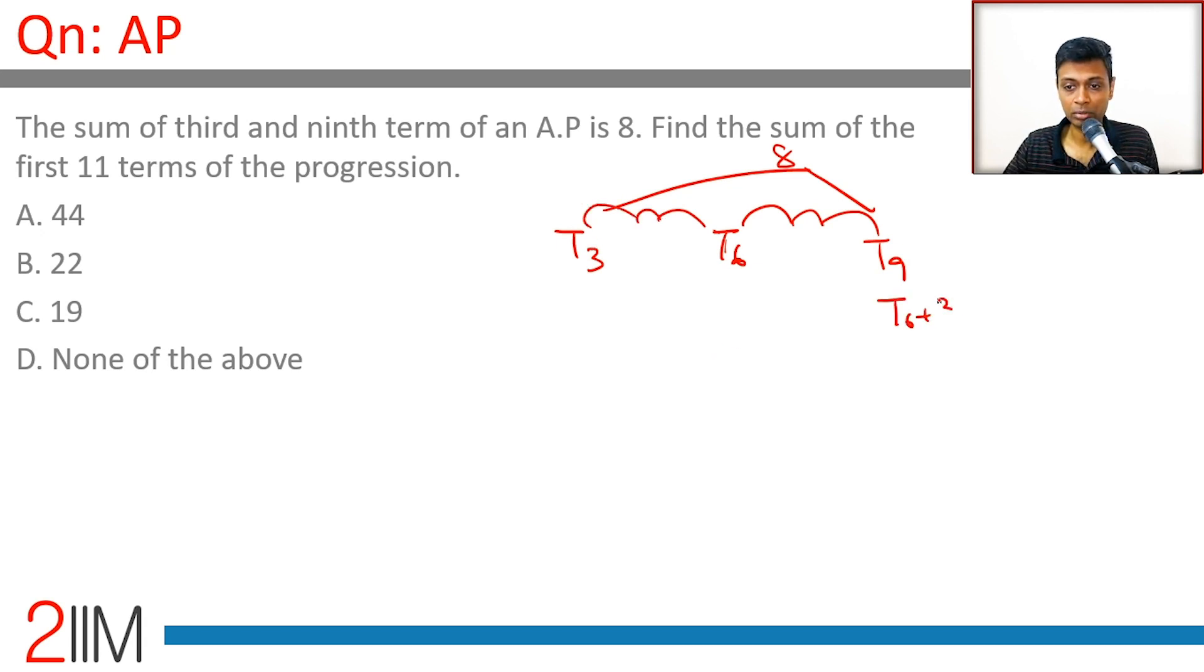This can be written as T6 plus 3d, this is T6 minus 3d. You add these two, you get 8, or 2 times T6 is 8, or T6 is 4.